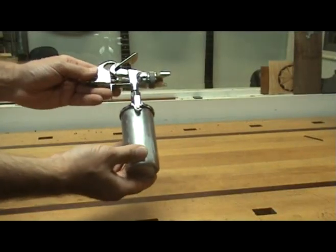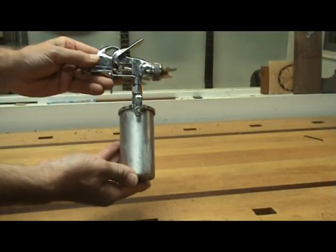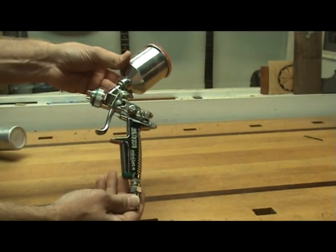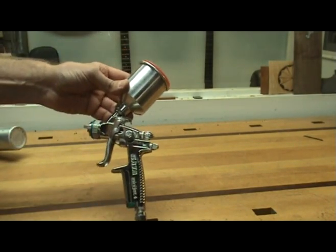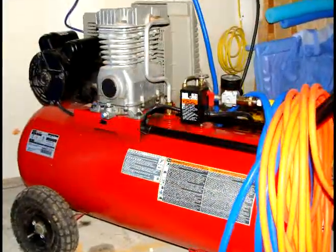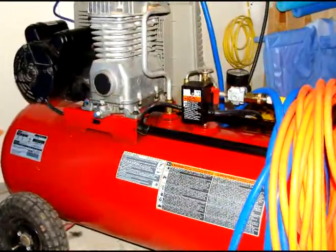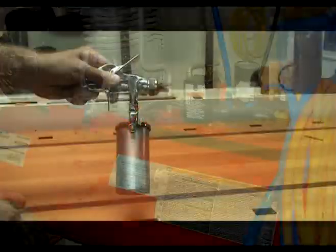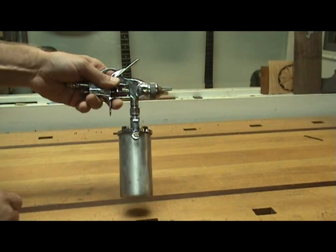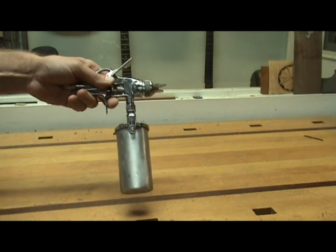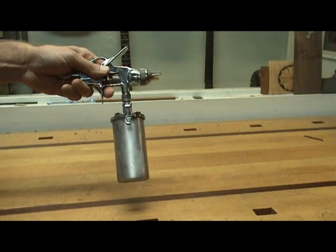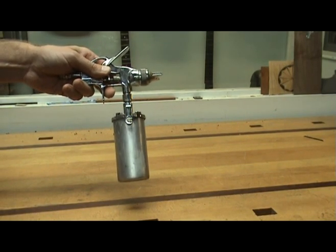There are two basic types of spray guns: conventional high pressure guns and the newer HVLP or high volume low pressure guns. Conventional guns use high pressure from a compressor to apply the product to the workpiece. These guns atomize the finish well, which means it flows out and levels into a smooth finish. However, they are not very efficient as only a small percentage of the material actually ends up on your project.